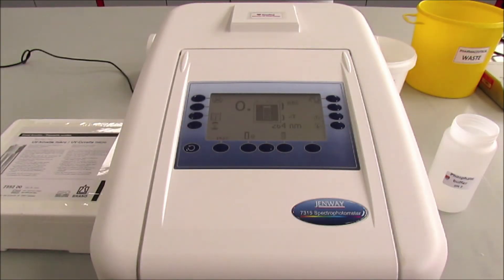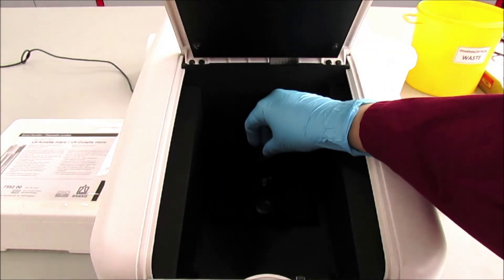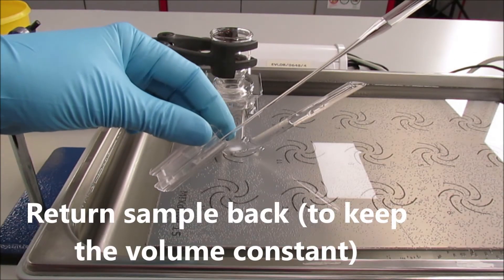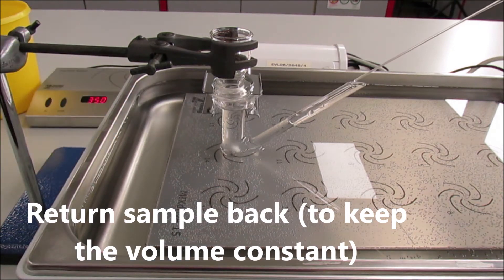First we need to auto-zero the instrument, telling the instrument that nothing is in there. We will auto-zero it with the water taken from the FRANS cell before we charge the FRANS cell with the gel.